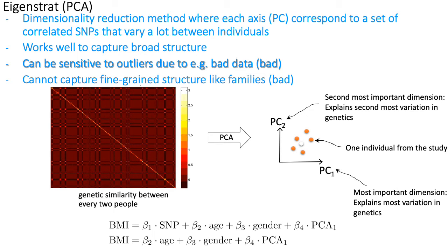PCA is useful for two reasons. First, it gives you 2D coordinates — PC1 and PC2 for each individual — letting you draw a scatter plot. The reduced dimensions are calculated so that variation in the 2D scatter plot captures the same variation as the original 10-million-SNP space, meaning two individuals that are close in genotype across all SNPs will also look close in PC space.